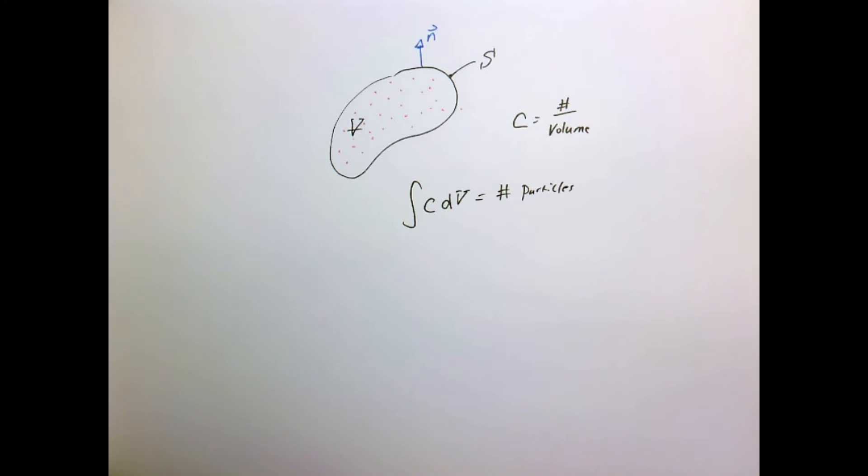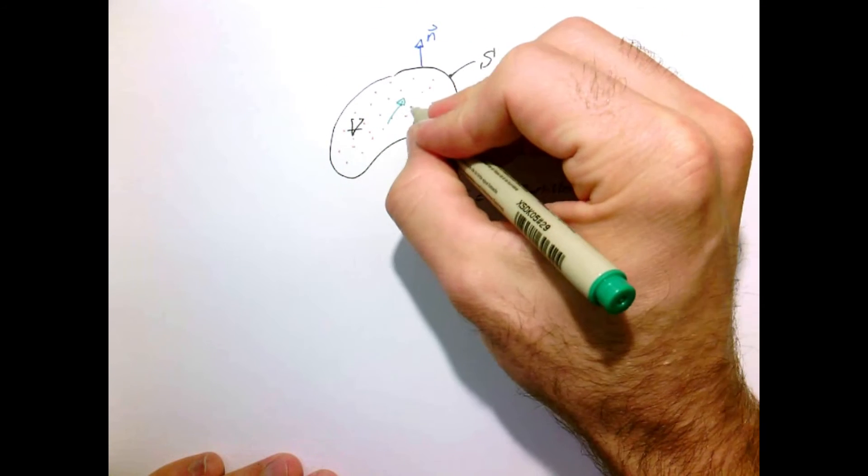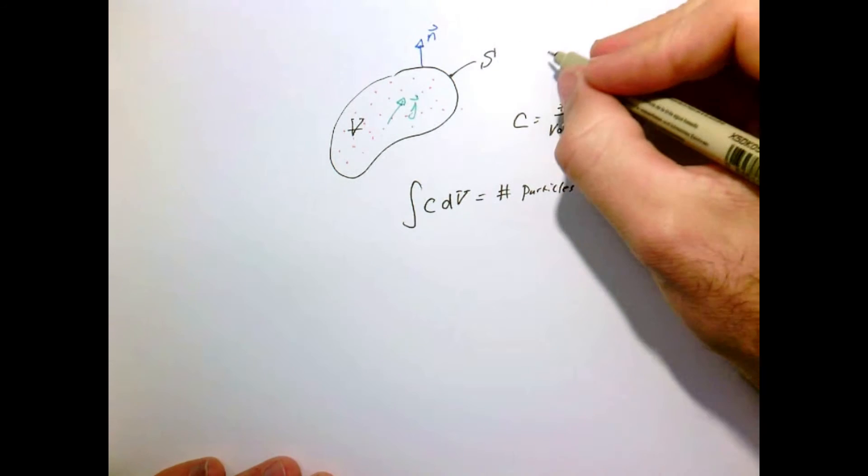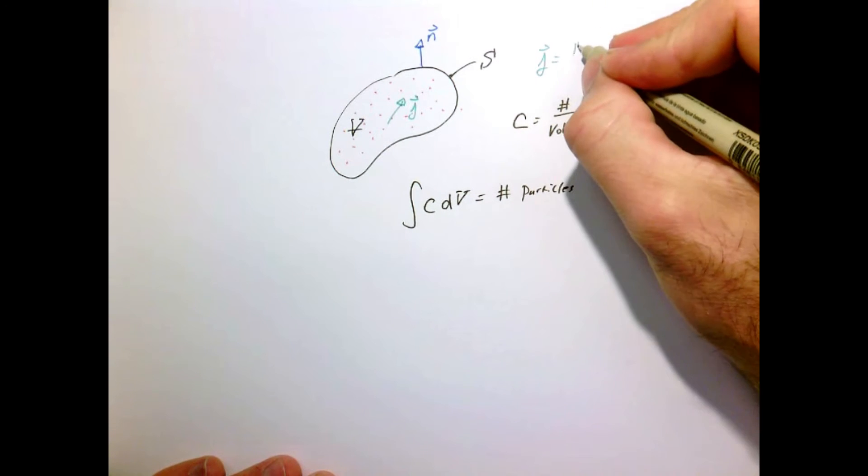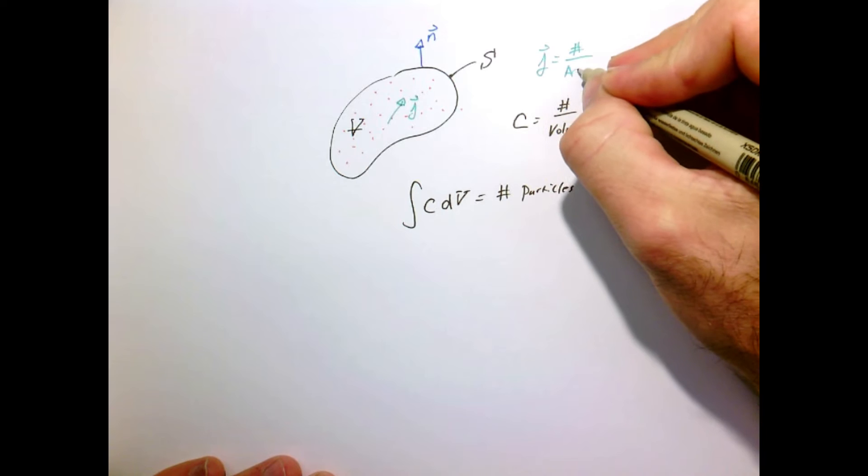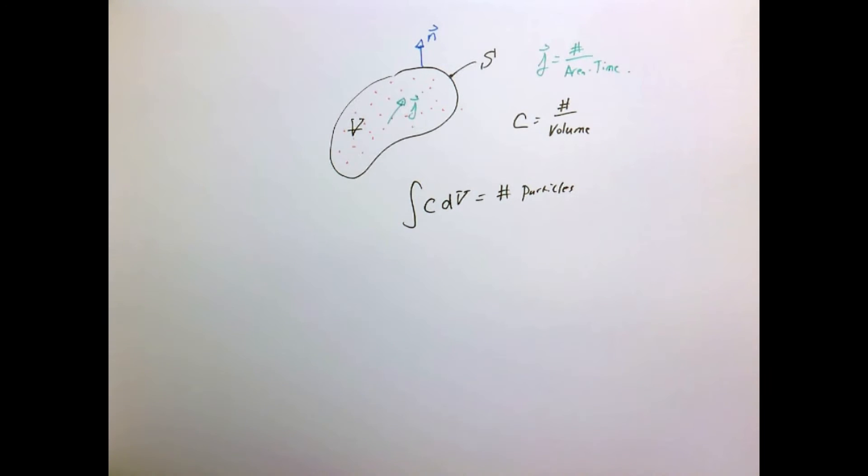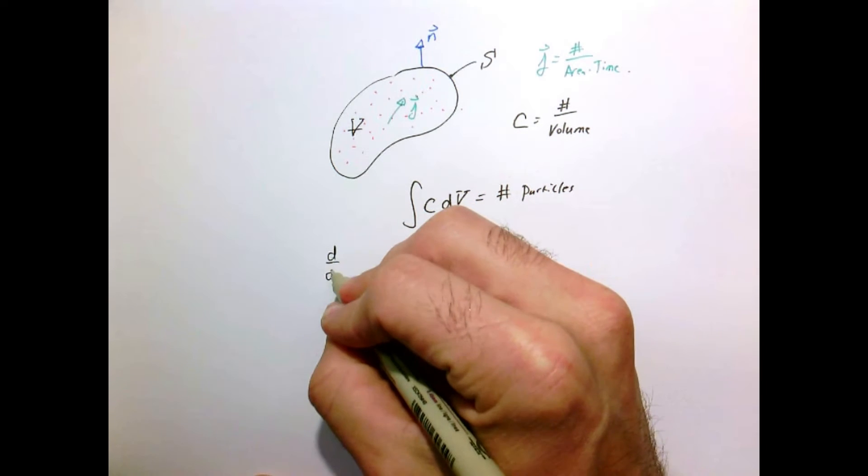We will use the vector notation j to denote the flux. J will be the number per unit area per unit time that's flowing, a vector quantity with magnitude and direction, just like the heat flux.